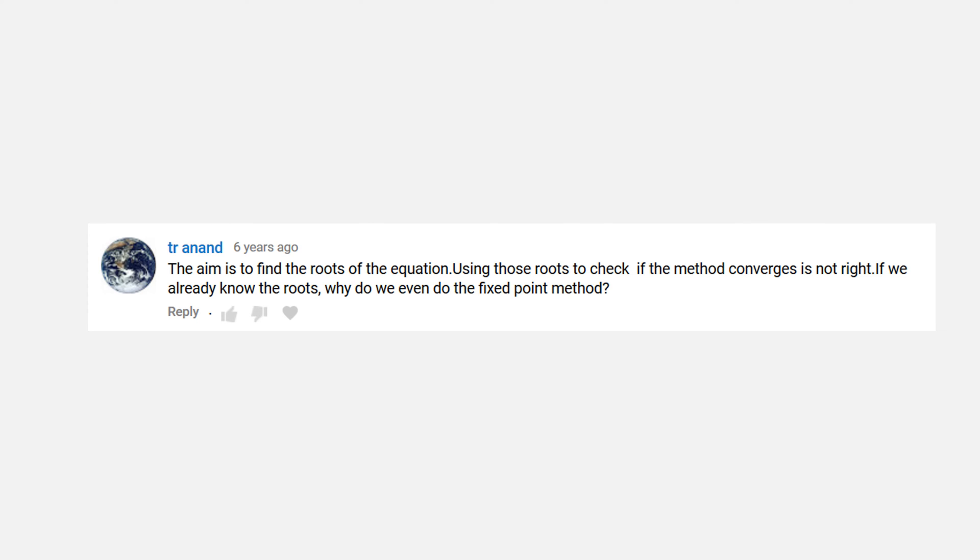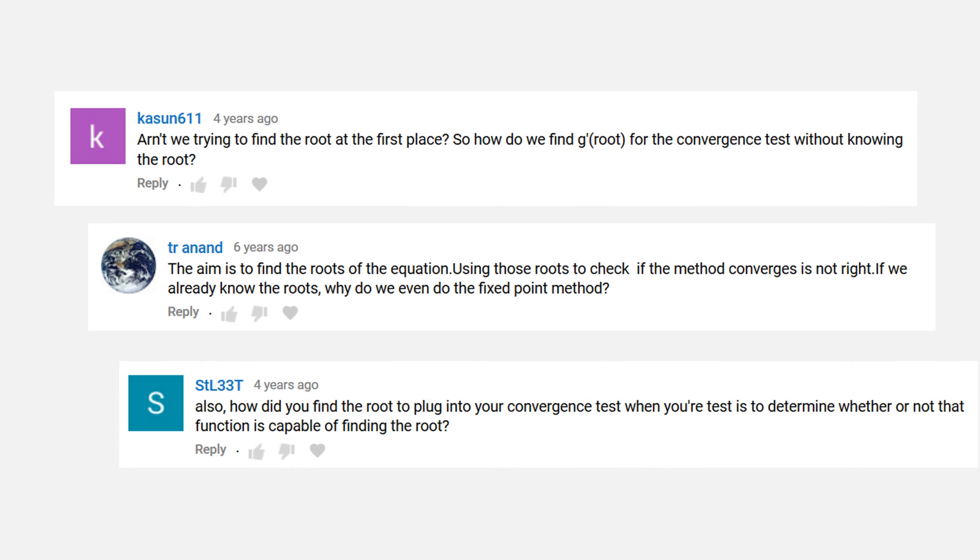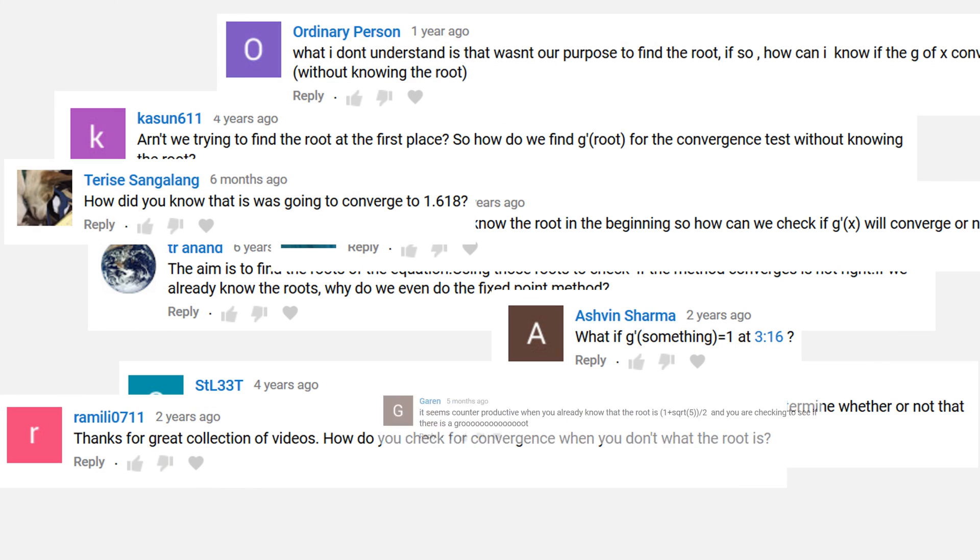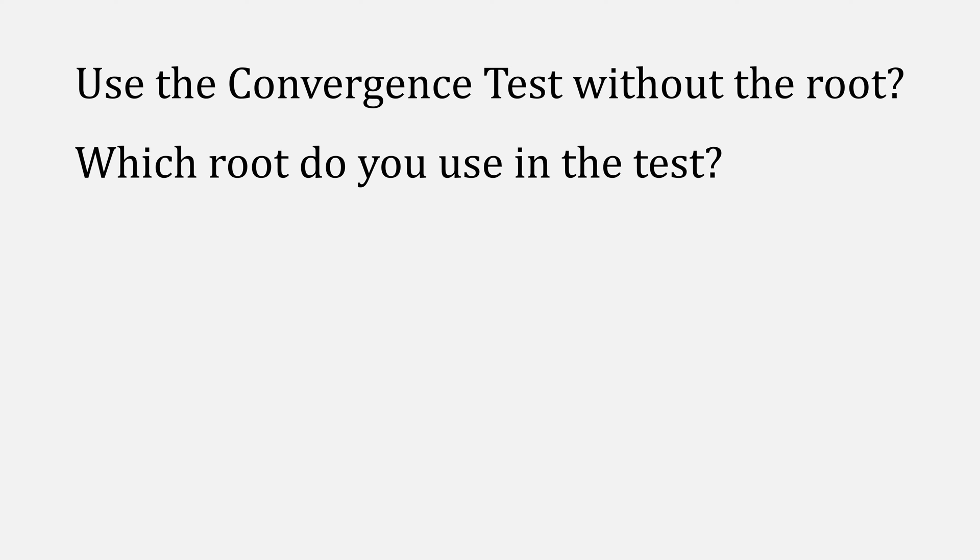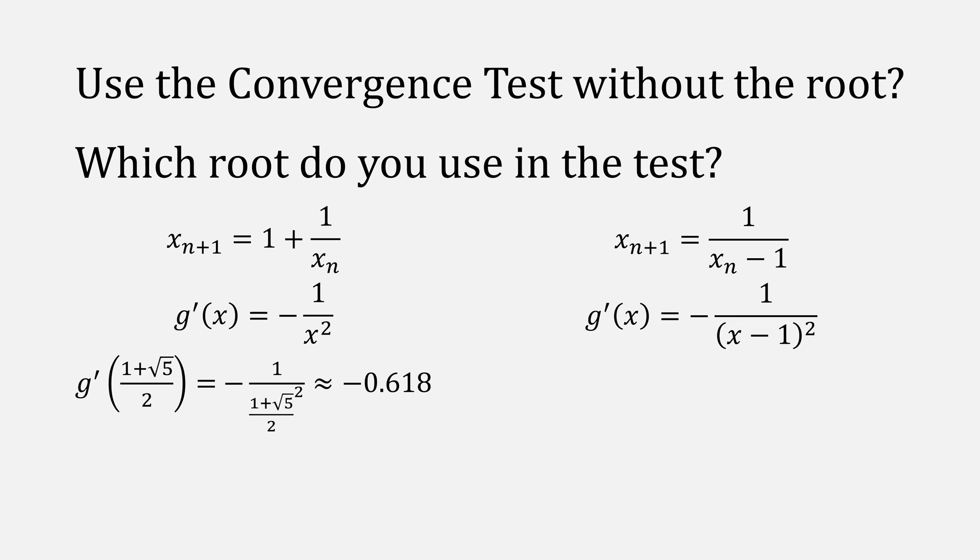And here's the last question we'll go over. Folks seem to want to know, how do you use the convergence test without the root? Also related, which root do you use in the convergence test? Recall our convergence test requires G prime, and that if G prime at our root is less than 1 in absolute value, it passes the test. And when it's greater than or equal to 1 in absolute value, it fails it.